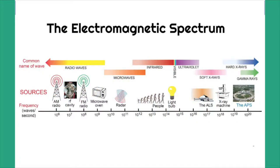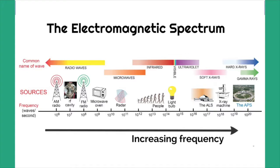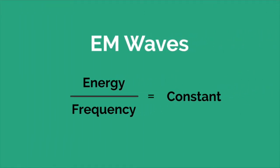What distinguishes between different types of electromagnetic waves is the frequency at which they vibrate. The higher the frequency, the more energy in the vibrating electromagnetic wave. In fact, the energy of an electromagnetic wave is directly proportional to its frequency. So energy over frequency is a constant. Therefore, if the frequency of an electromagnetic wave doubles, so does its energy.